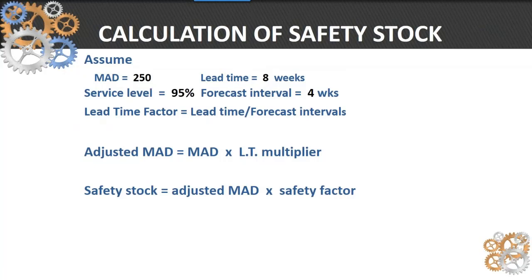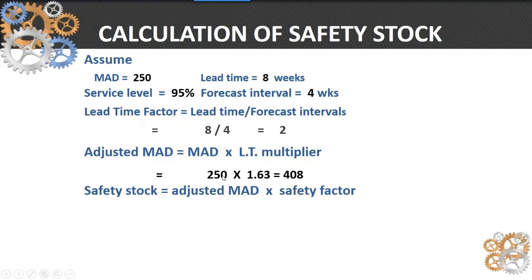Here's a simple example of the safety stock calculation. We've got a mean absolute deviation of 250 units, our lead time is eight weeks, we want a 95% service factor, and our forecast interval is four weeks. Taking the lead time divided by the forecast interval gives us a multiplier of two. We adjust the MAD by that multiplier — looking back at the previous table, a value of two equals an adjustment factor of 1.63. So we multiply the MAD times 1.63 to get 408.